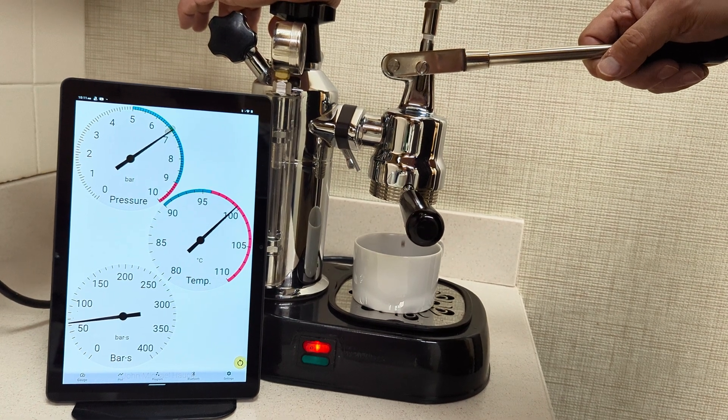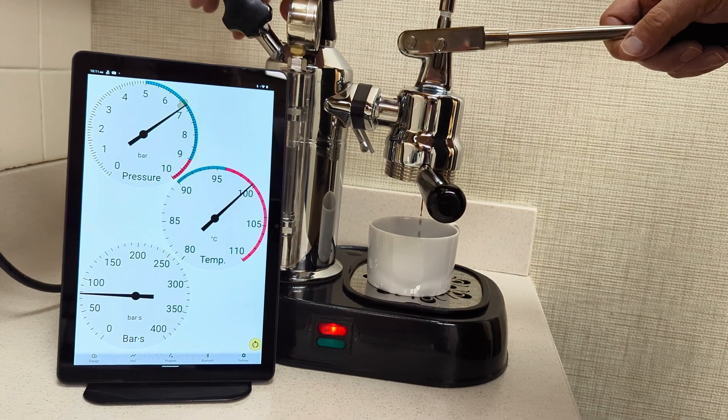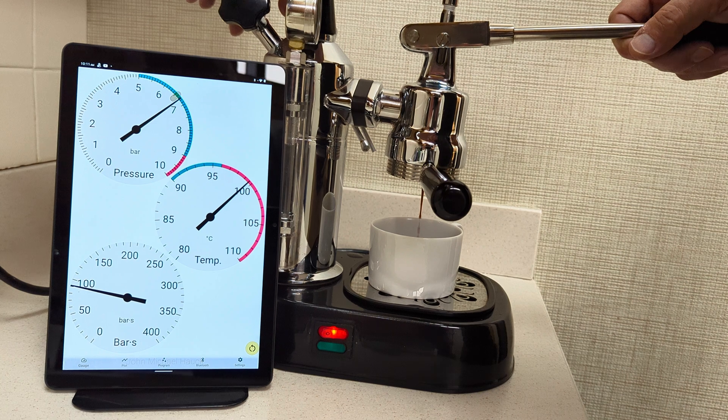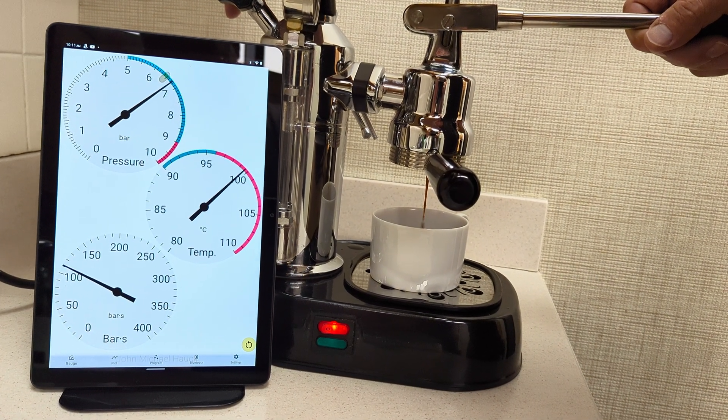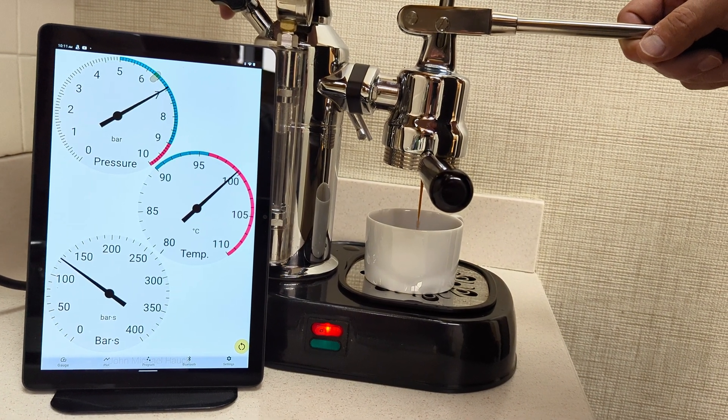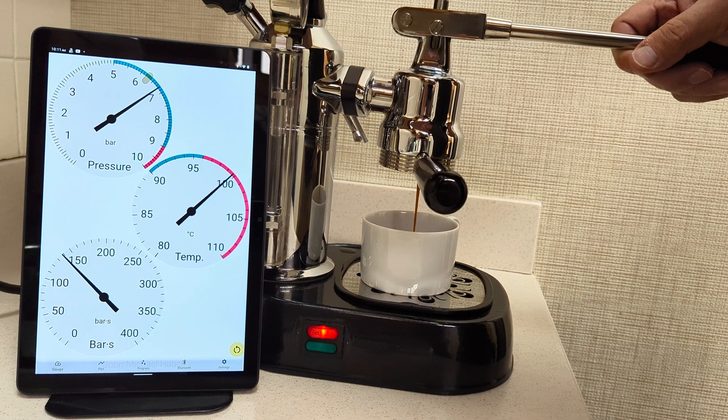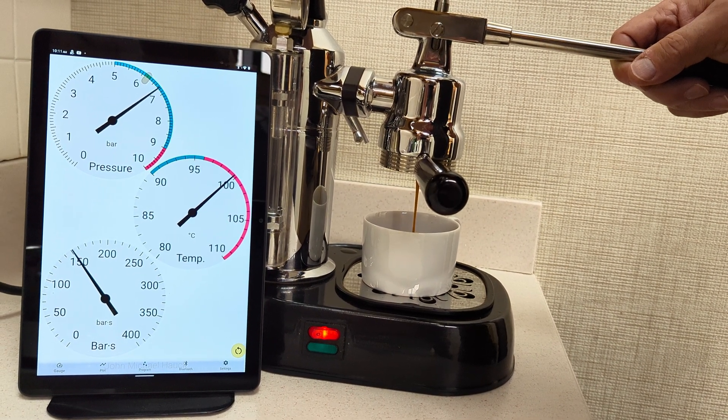And you can see that while the pressure is up at seven, the bars per second is going up. So every second we're at seven bar is another bar S added to the sum there.